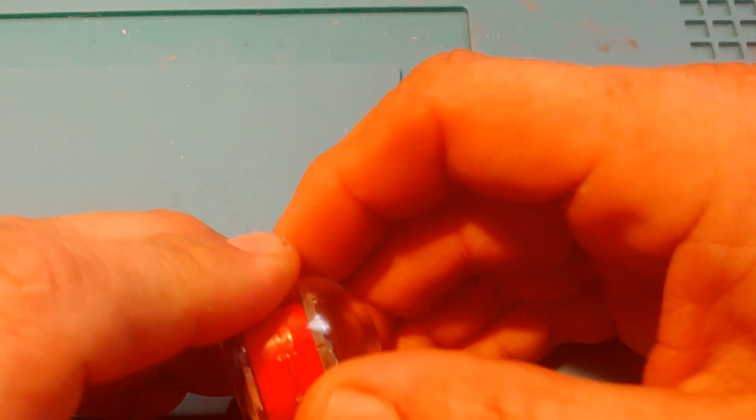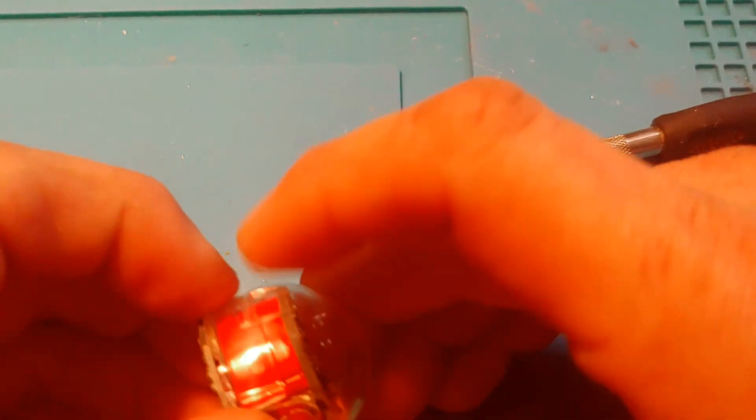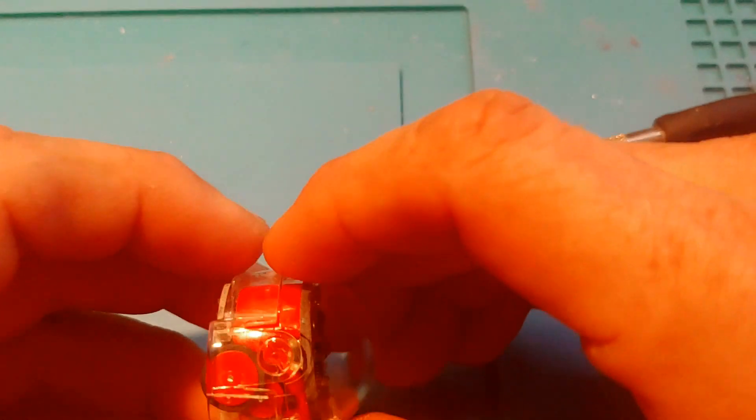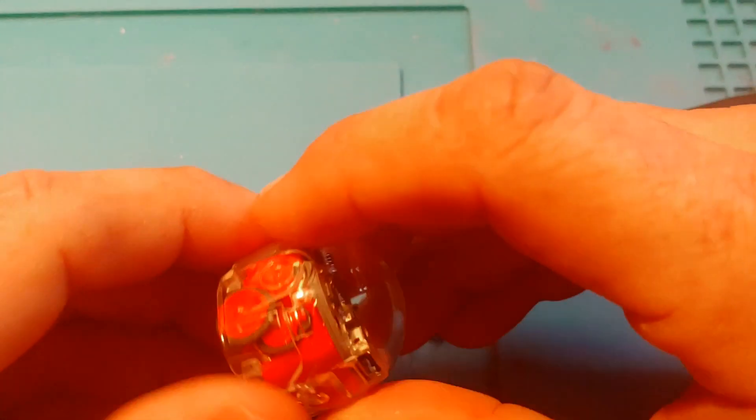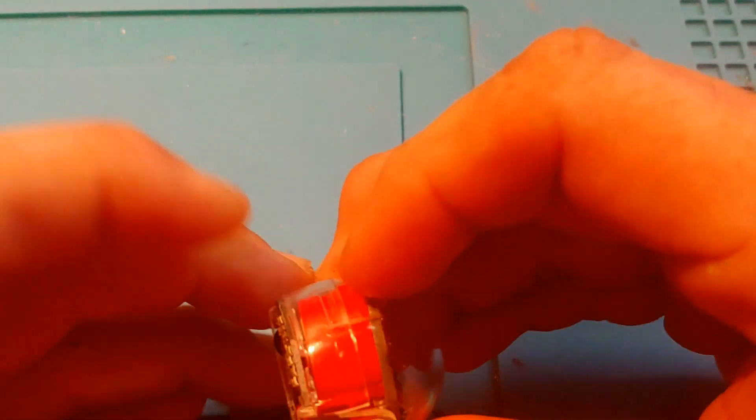So once you get the three screws out, then you're ready to take the two halves apart. And you'll see there's that little plastic tab in there. What I'm trying to do is get the top portion out. So you can see I actually go to start prying it and it pops right off.